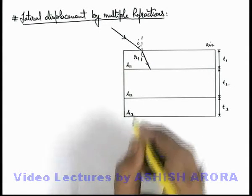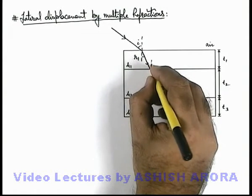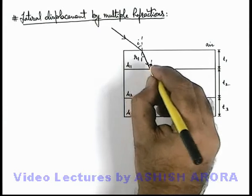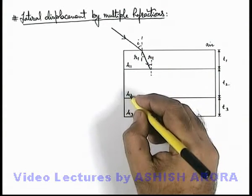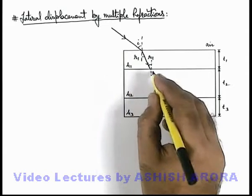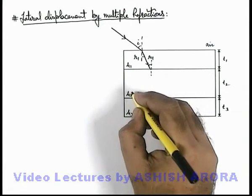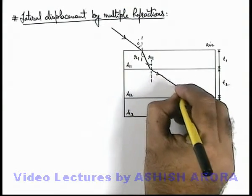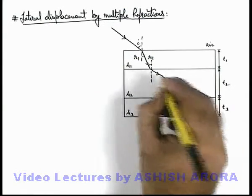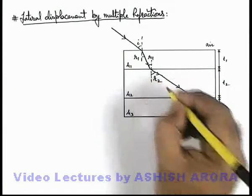On the other side of the boundary, as it is parallel, the incidence angle can be taken as r1. And if μ2 is more than μ1, then it will further bend toward normal, and if μ2 is less than μ1, here we can see it will bend slightly away from normal and it will reach this position, and say if this angle is r2.